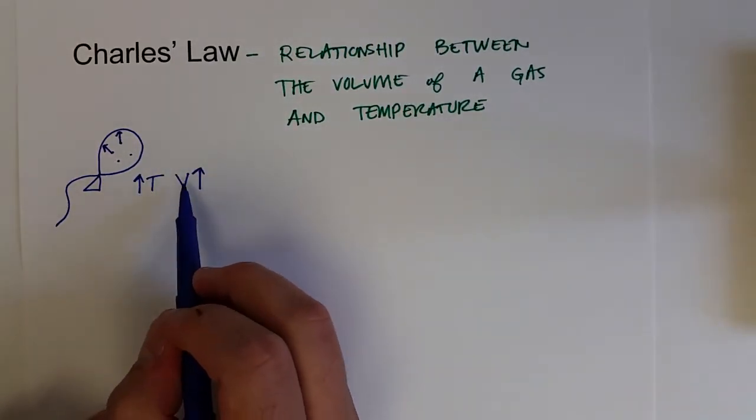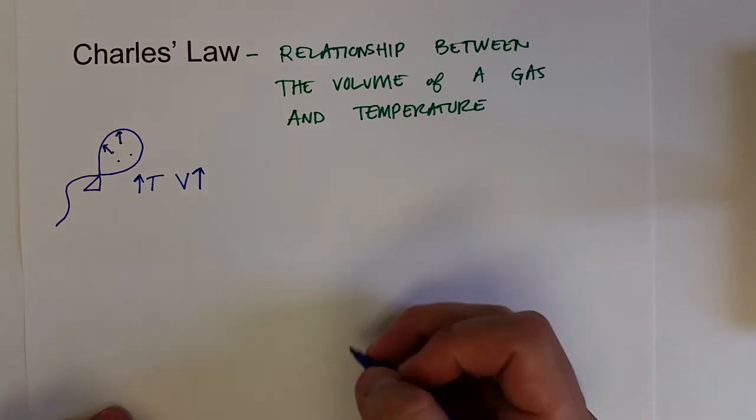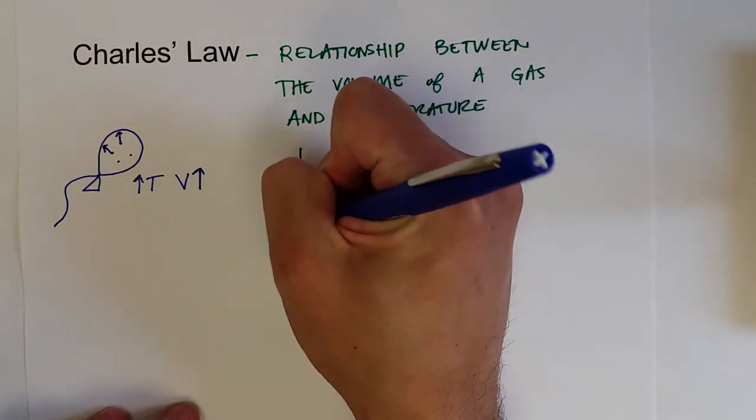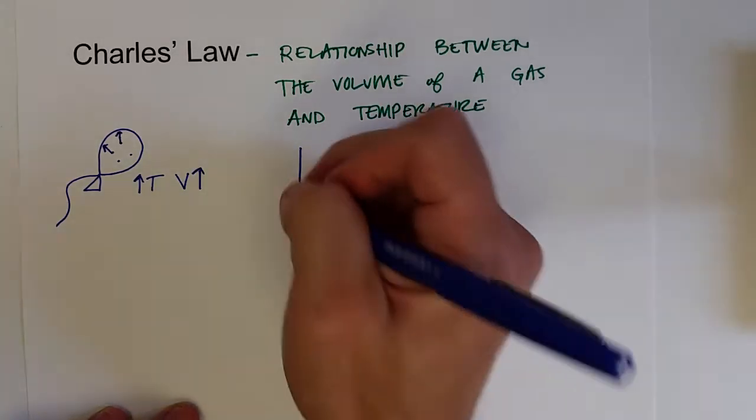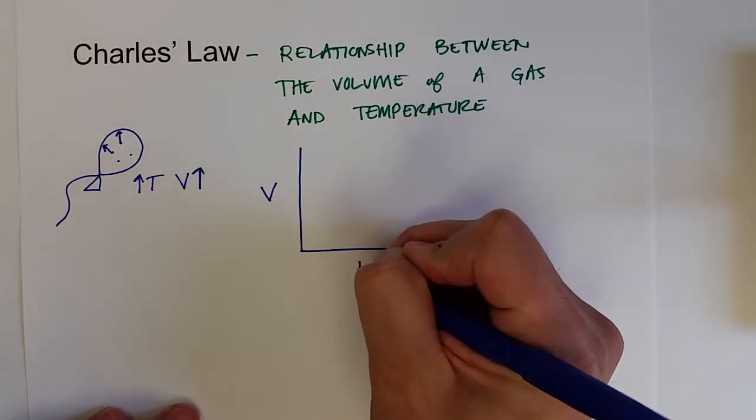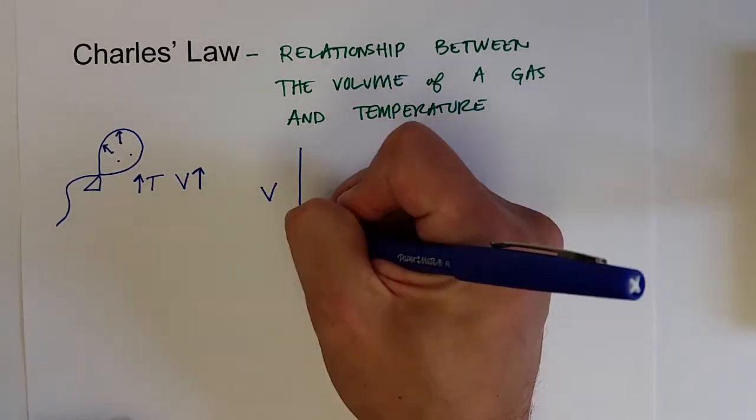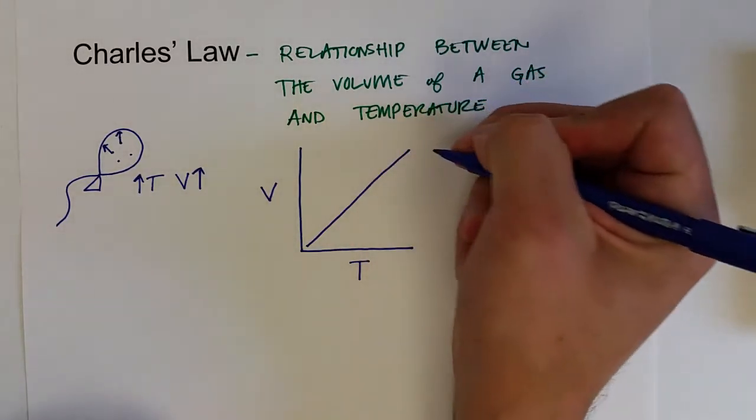So it turns out that temperature and volume of a gas are directly proportional. So if we were to plot volume as a function of temperature, we would see a plot that looks like this.